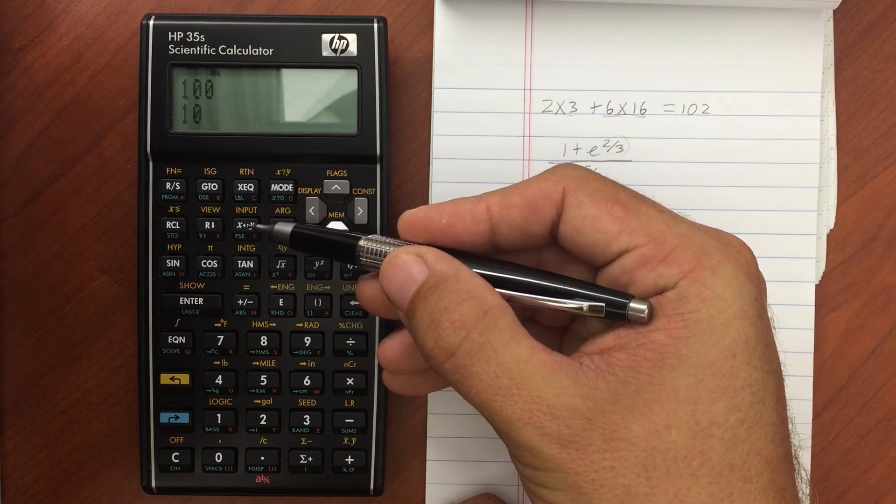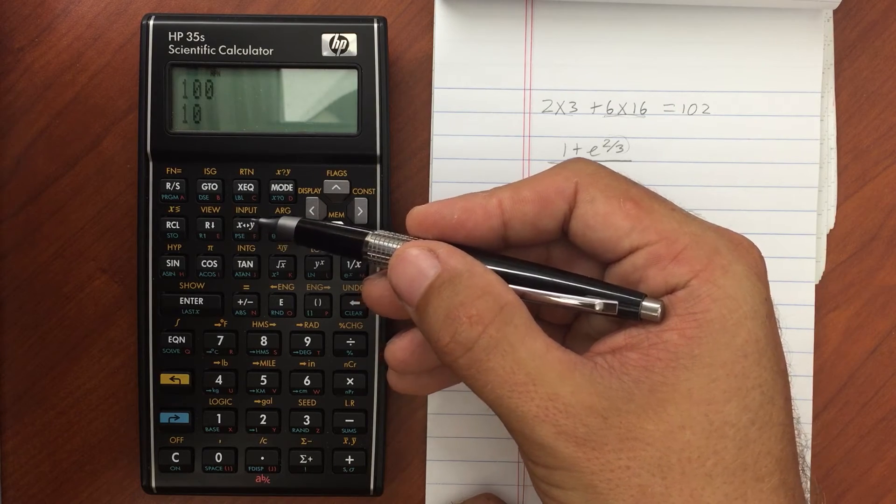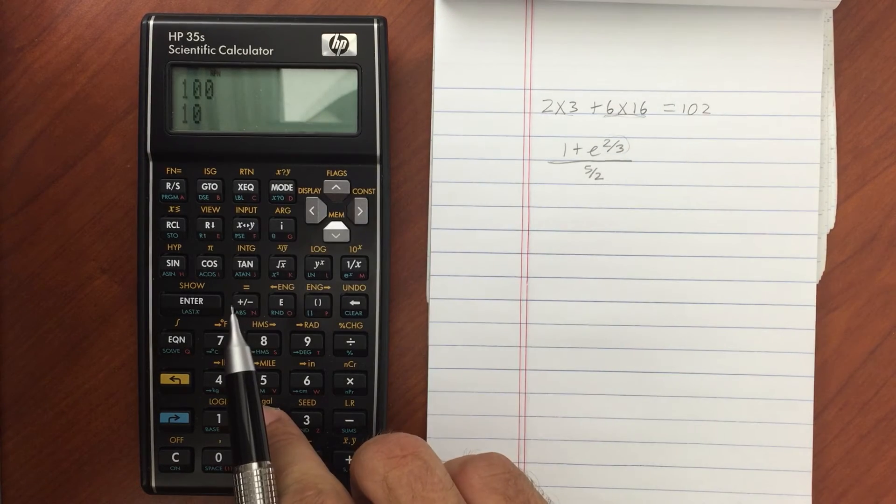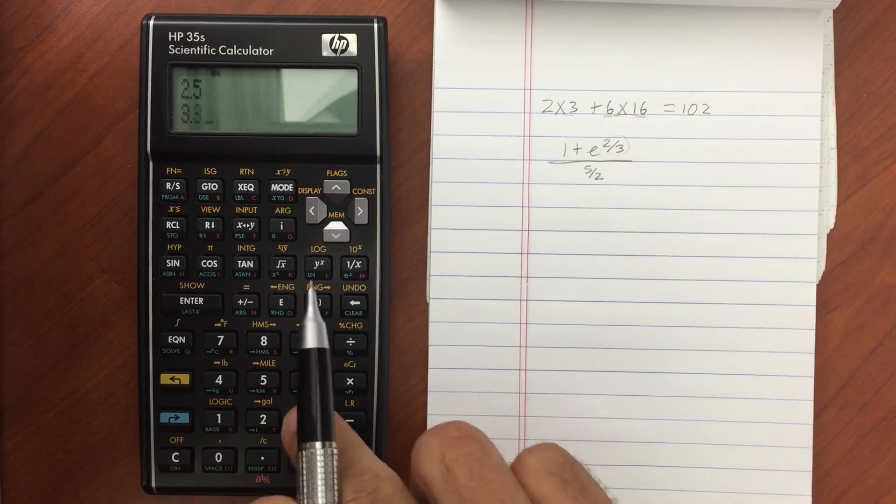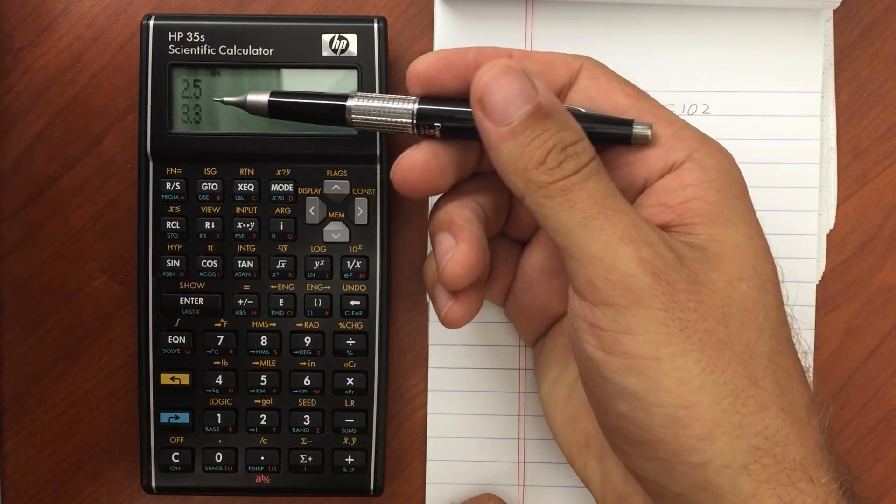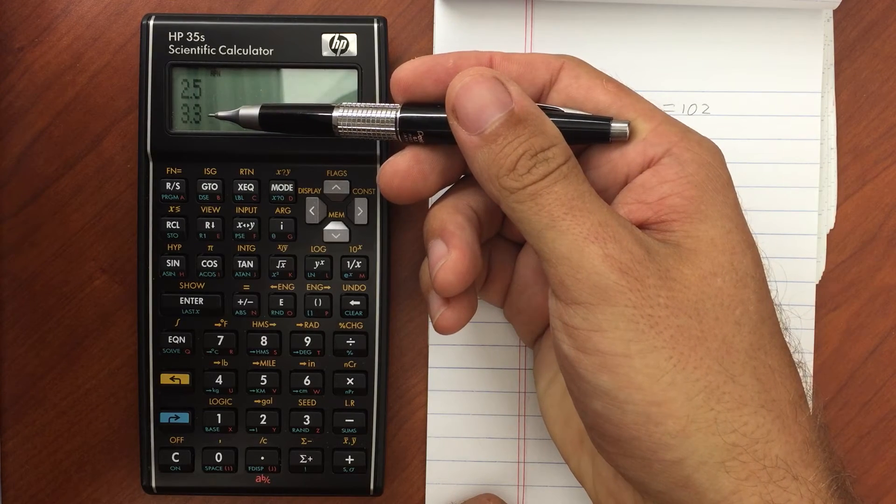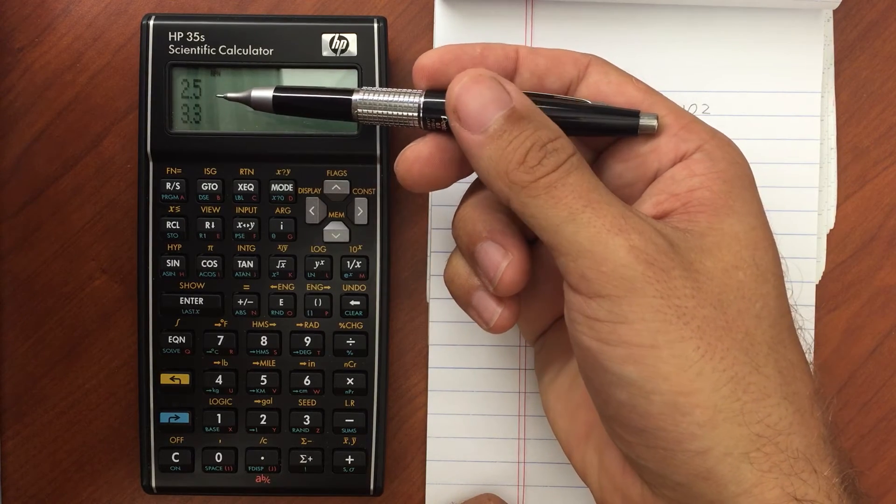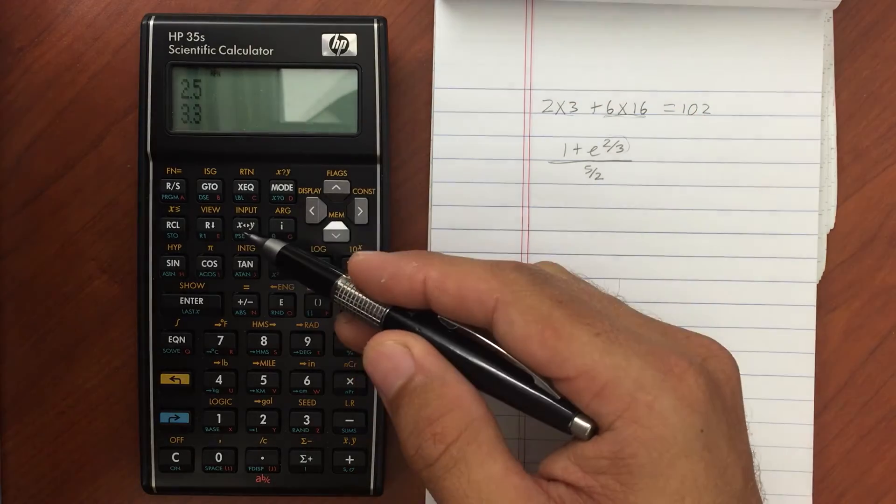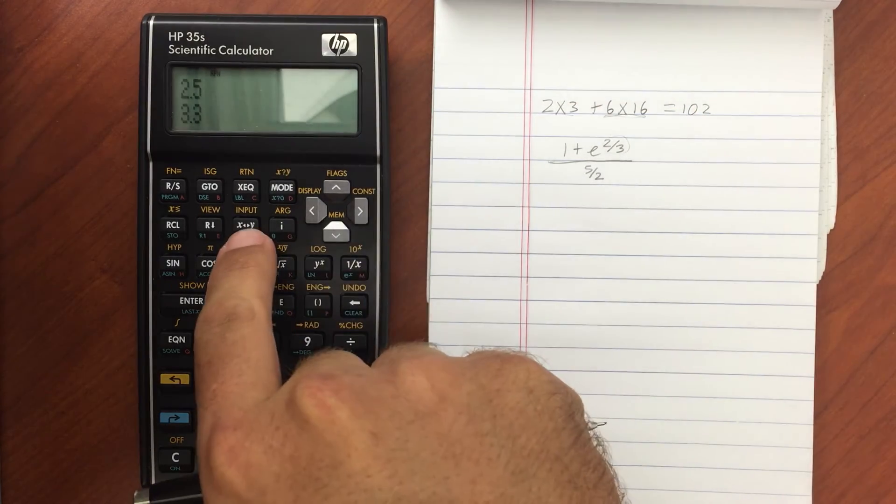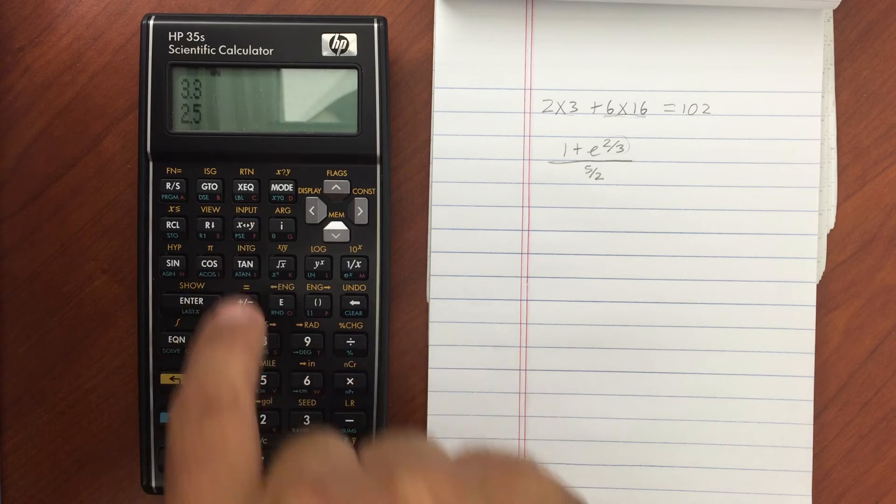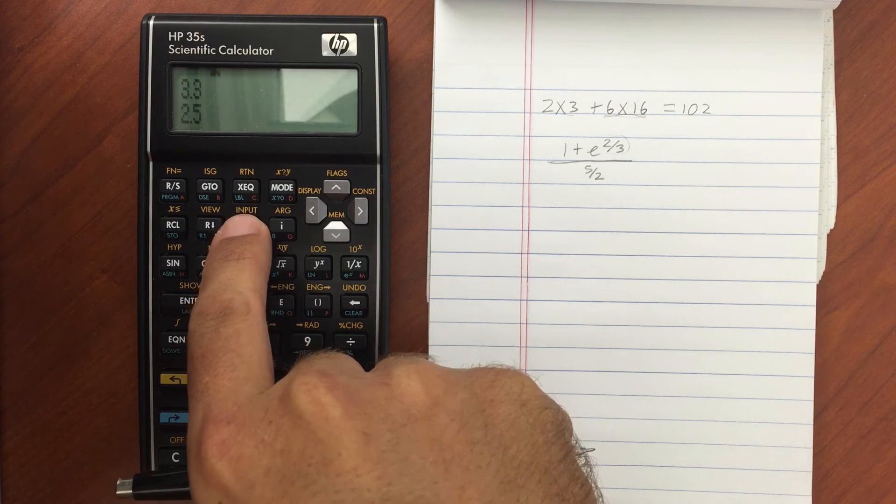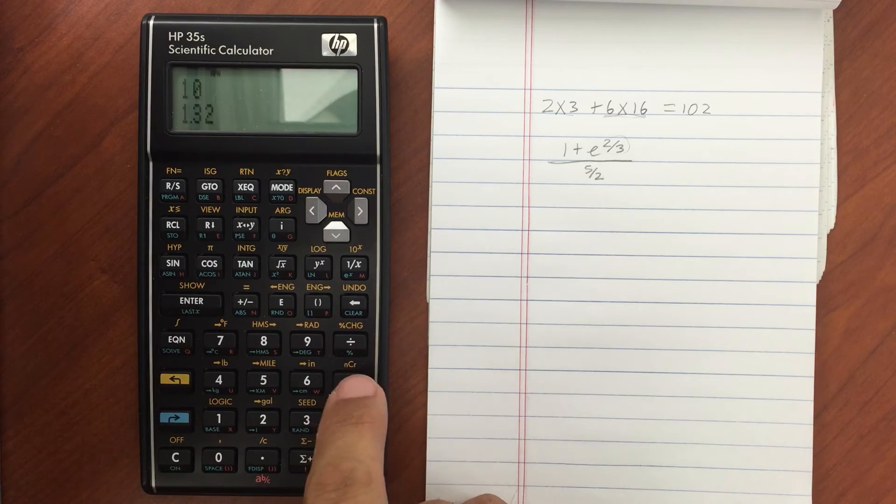A couple other things to note. This swaps what is in the x and the y register. So say for example you had 2.5 and then 3.3. And you realized you wanted to divide 3.3 by 2.5 instead of the other way around. So you can swap those two by hitting the x swap y. And swap those back and forth. And then do your division.